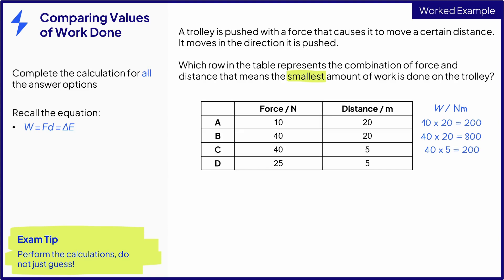And for option D, the work done is 25 times 5, which is 125 newton meters or joules. Therefore, the combination that produces the smallest amount of work done is D at 125 newton meters or joules for one mark.